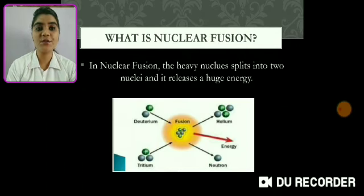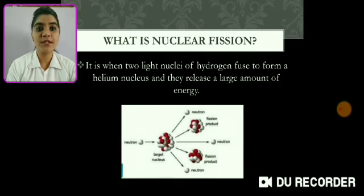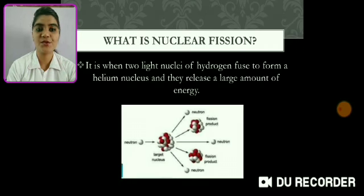So first of all, what is nuclear fission? In nuclear fission, the heavy nucleus splits into two nuclei and it releases a huge amount of energy. What is nuclear fusion? It is when two light nuclei of hydrogen fuse to form a helium nucleus and they release a large amount of energy, which is shown in the diagram.